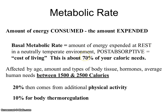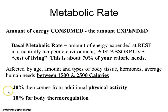BMR is affected by age — it declines as you get older — as well as the amount and types of body tissue. More muscle is more costly to maintain than fat, which raises BMR. Hormones also matter: levels of thyroxine and triiodothyronine directly affect basal metabolic rate. The average human needs between 1500 and 2500 calories per day, with the remaining 30 percent of caloric needs beyond BMR coming from additional physical activity.